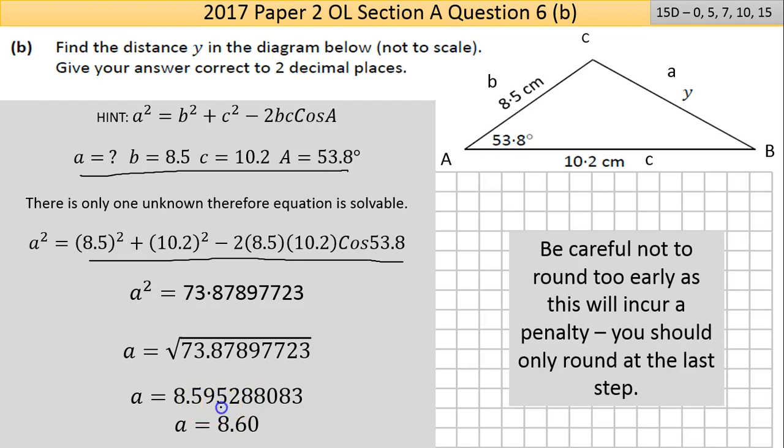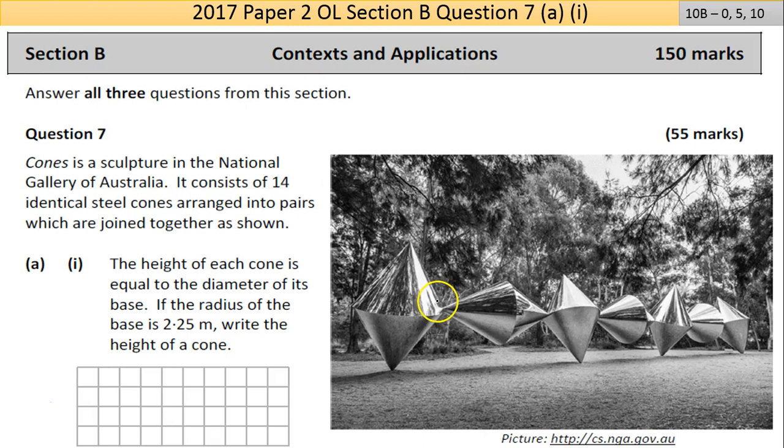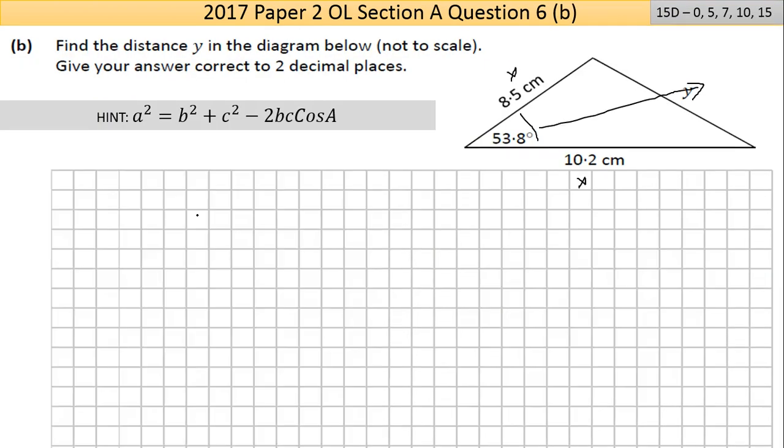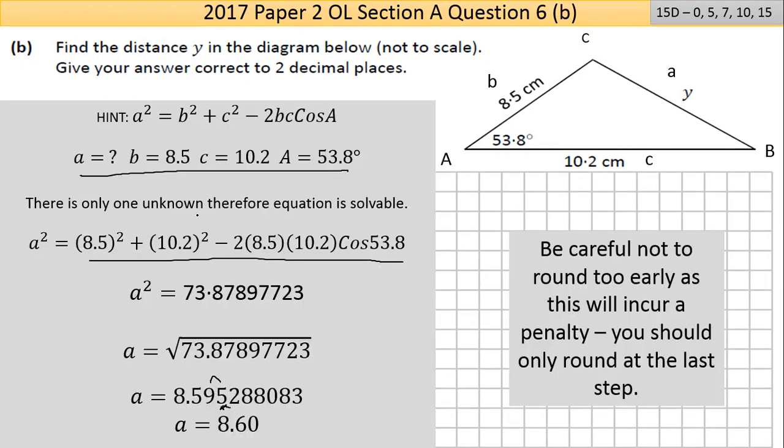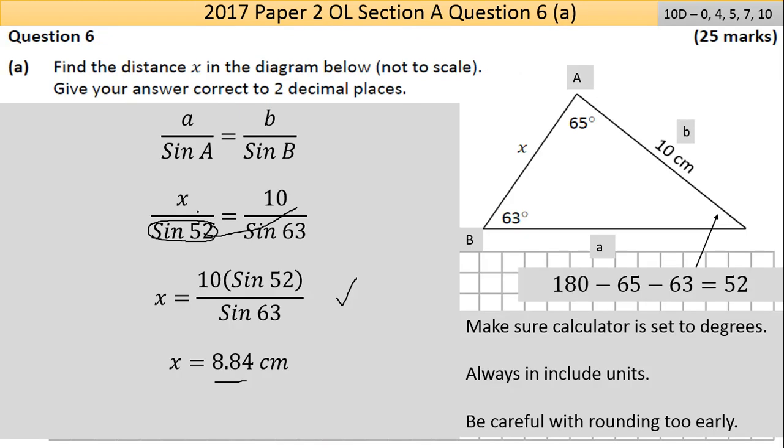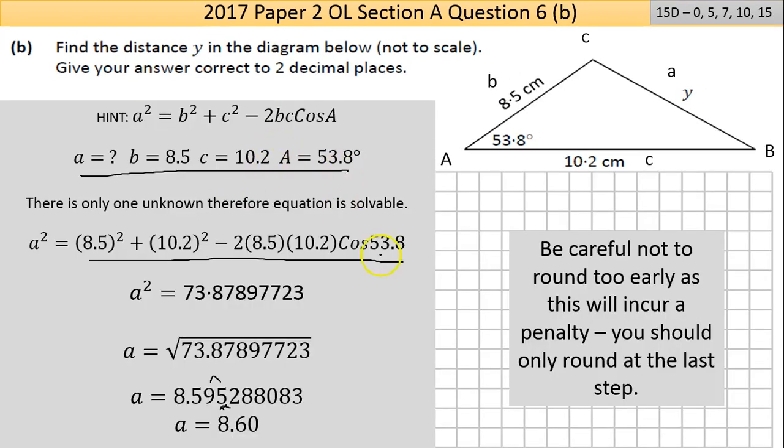We need to make that to 1 decimal place, so I look at the number just afterwards. If that's 5 or greater, the next number rounds up by one. So that's 8.60, or 8.6 cm. That's that part. That's the end of Question 6 - two parts, 15 and 10.